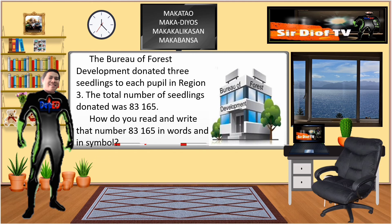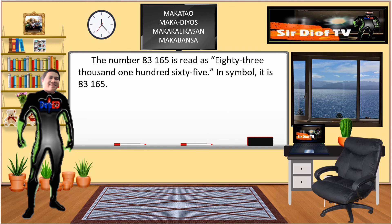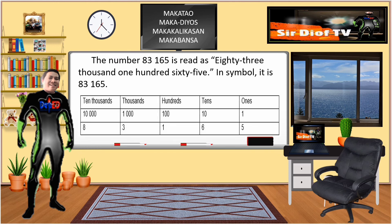The Bureau of Forest Development donated tree seedlings to each people in Region 3. The total number of seedlings donated was 83,165. How do you read and write that number, 83,165, in words and in symbols? The number 83,165 is read as eighty-three thousand, one hundred sixty-five. In symbol, it is 83,165.